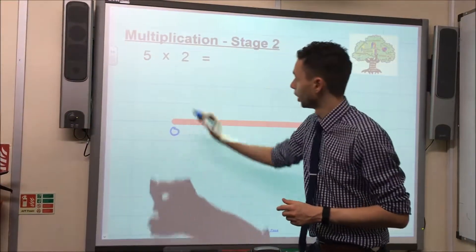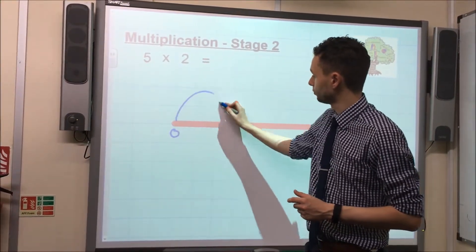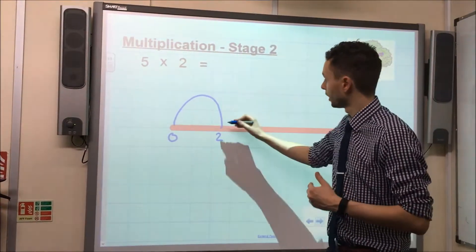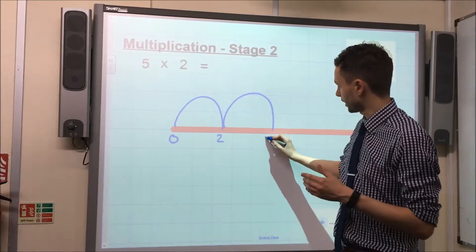We start off with 0 and we take one of our first jumps, which takes us up to 2, because remember we are jumping in steps of 2. Take my second jump, which takes me up to 4.